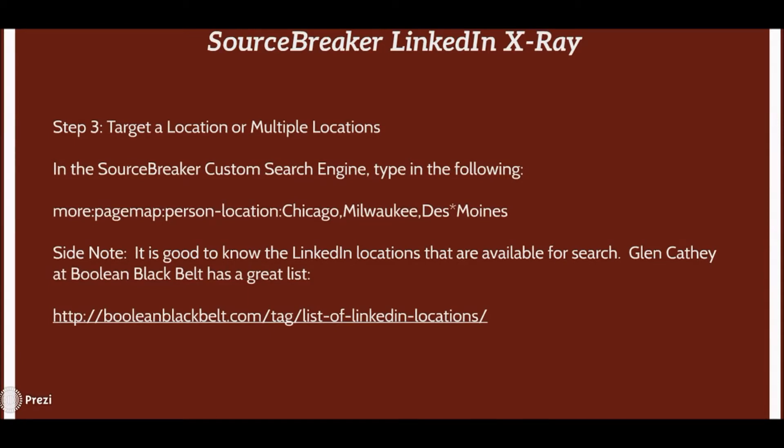Step three is location targeting. In the Source Breaker custom search engine you're going to type: more:pagemap:person-location: — that hyphen-location addition will allow you to target as many locations as you want. As a quick side note, if you're unfamiliar with how LinkedIn categorizes locations, Glenn Cathey over at booleanblackbelt.com has a great list linked in the description — covering metro areas and rural areas.